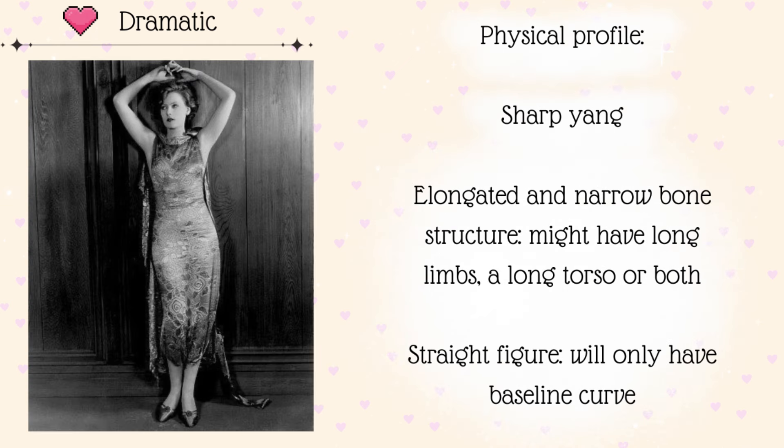Now let's look at the physical profile of Dramatics. They are sharp Yang, so sharp angles. Their bone structure is elongated and narrow — this elongation can come from long limbs, a long torso, or both. Their figure is straight; they will only have baseline curve. If they are a bit curvy in the conventional sense, the curve won't be going past their frame — it won't be Kibbe Curve. I have also made a video explaining Kibbe Curve that I'm going to link here.